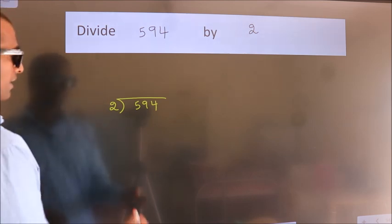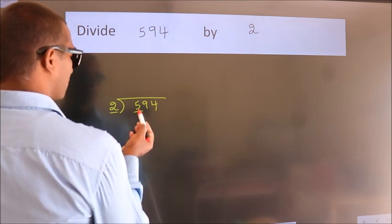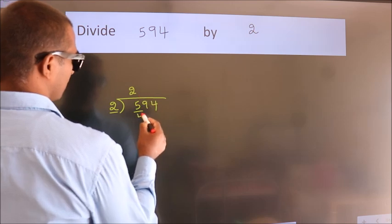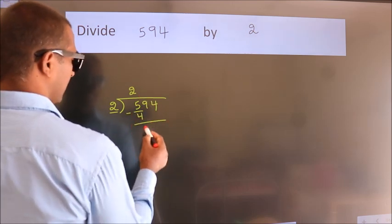Next. Here we have 5, here 2. A number close to 5 in 2 table is 2 times 2, which is 4. Now we should subtract. We get 1.